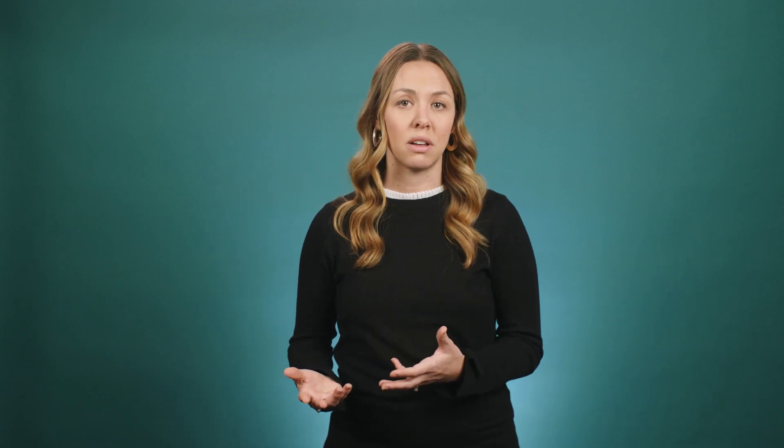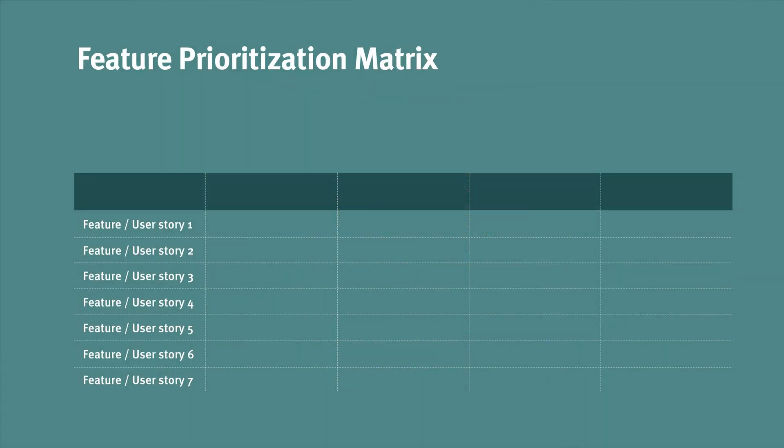There are plenty of more formal ways to employ personas on the product and make a more tangible impact on the work we do. One of the most useful ways is to use personas to evaluate features you intend to build or the user stories in your backlog by using a feature prioritization matrix.